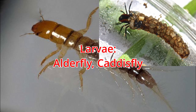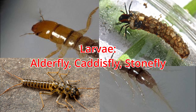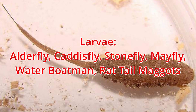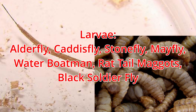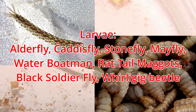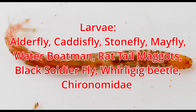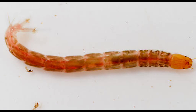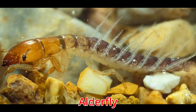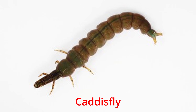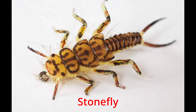Larvae. Alderfly, Caddisfly, Stonefly, Mayfly, Waterboatman, Rattail maggot, Black Soldierfly, Whirligig beetle, Chironomidae. So these are a bunch of bug larvae I missed in the first one. I could go over each one and explain the details of them, but it's much easier to just flash some pictures with the text of each type and let you figure it out. Comment below if you're having trouble — I can try to help you out.